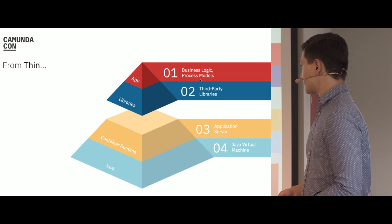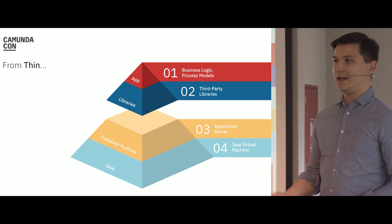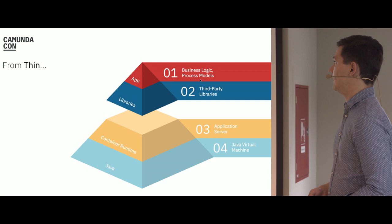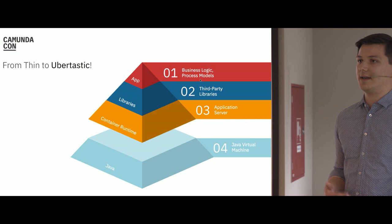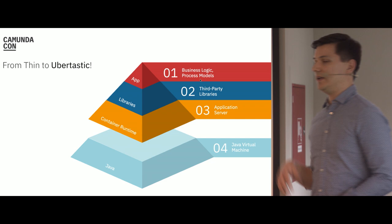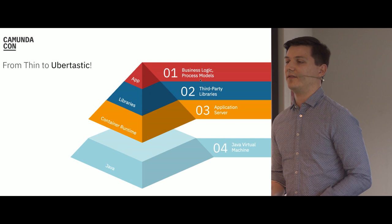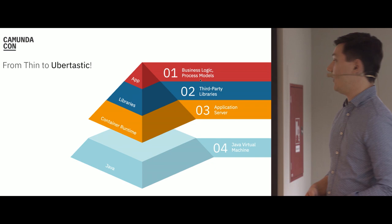A traditional Java application server is not easy to set up — you need to configure it correctly, maintain it, and update it regularly. This is what a thin jar requires you to do. In contrast, the uber jar has the container runtime already included in the Java archive. This means we don't need an independent Java application server. It runs on any machine that has the minimal requirement of Java installed, which makes things a lot easier.